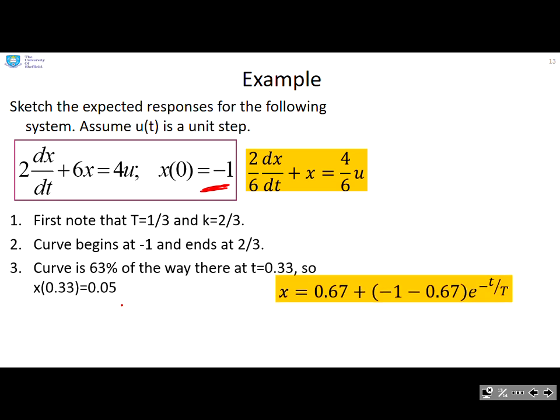Then I look at my solution, my general solution. So here it is. I've got my cu term, which is 0.67. I've got my x(0) minus cu times e to the minus t over T. And then I just plug in some values. So this is where you do need your calculator, you've just got to put in some numbers. So I calculate after one time constant and I get 0.05. I calculate after three time constants. People don't normally bother with two. And after three time constants I'm at 0.58.